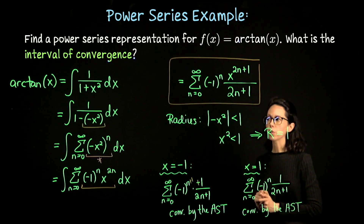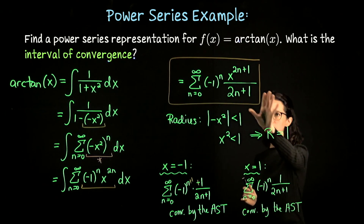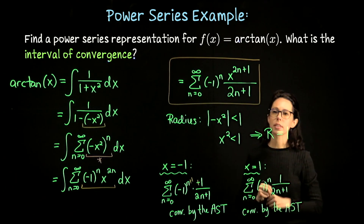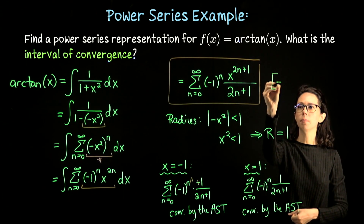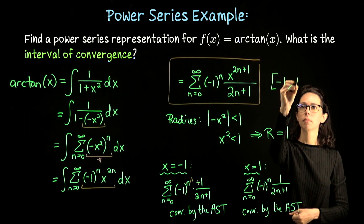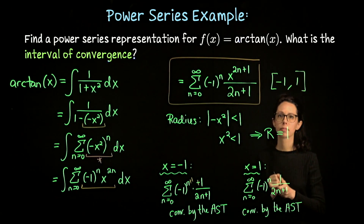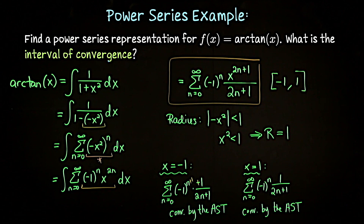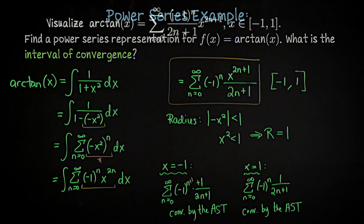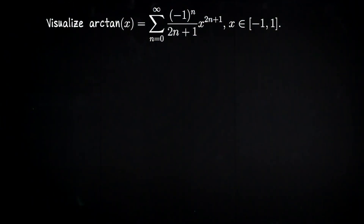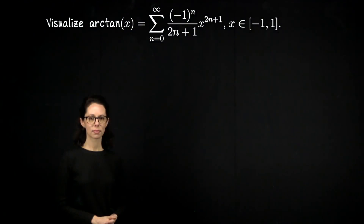The conclusion is that arctan of x has this power series representation on the closed interval from negative 1 to 1.